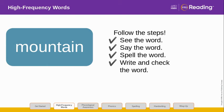Look at the letters in the word. Let's spell it. M-O-U-N-T-A-I-N. Mountain. The letters O-U stand for the sound OO. In this word, the letters A-I stand for the sound I. Blend with me. M-O-U-N-T.